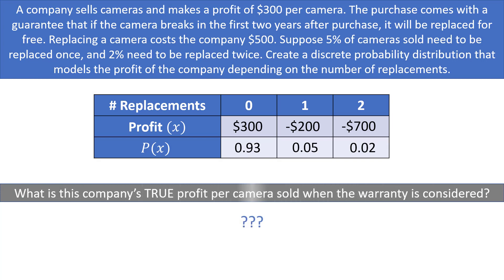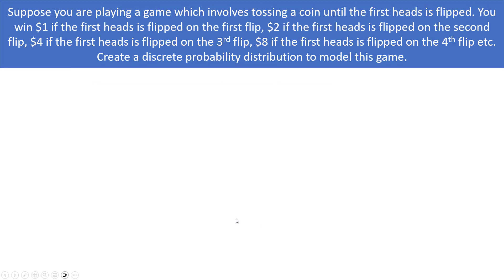The last part asks for the company's true profit per camera sold when the warranty is considered — essentially the expected value. Take each profit, multiply by the corresponding P(X), and sum the products to find the mean expected profit.